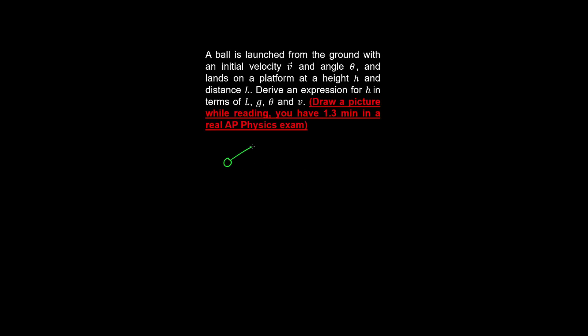A ball is launched from the ground with an initial velocity v and angle theta, and lands on a platform at a height h and distance l. We are asked to derive an expression for h in terms of these variables.